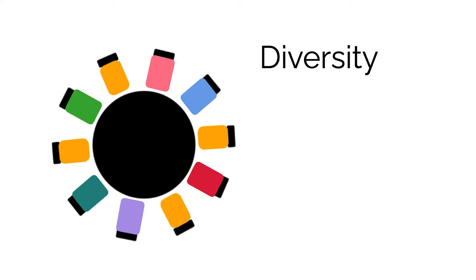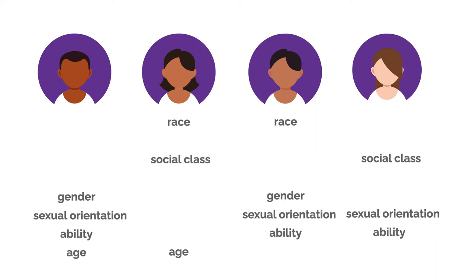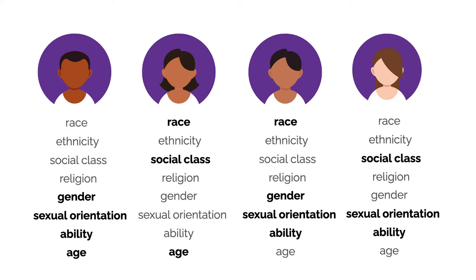Each person at the table possesses identity markers that diversify a group. These include race, ethnicity, social class, religion, gender, sexual orientation, ability, and age, among others. These markers overlap, which means people may share some markers and not others. This is known as intersectionality.